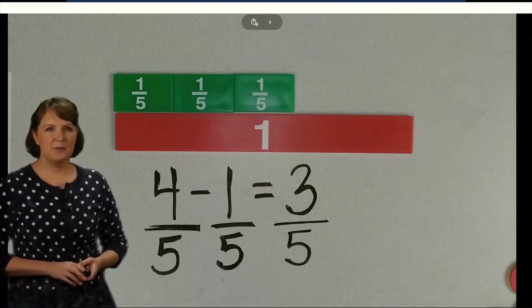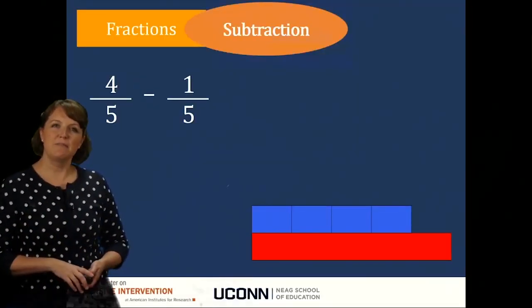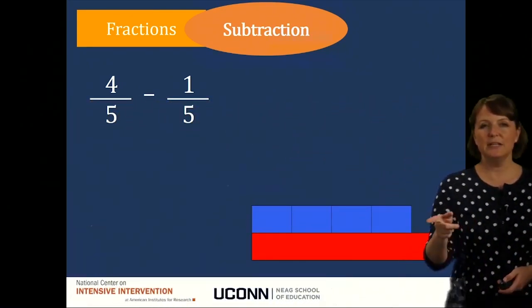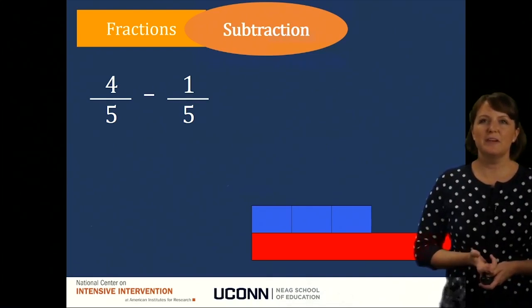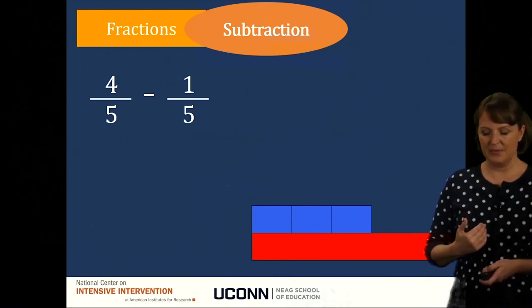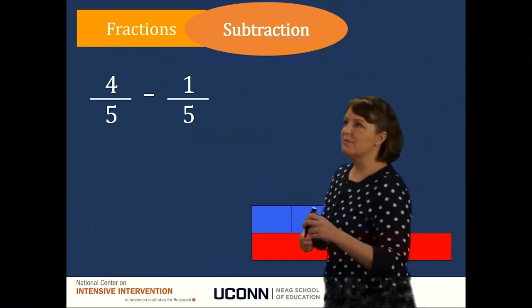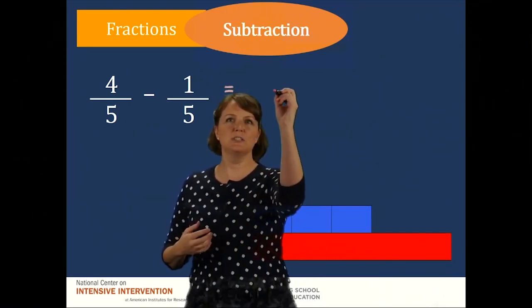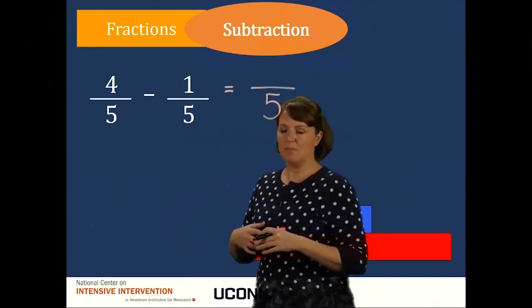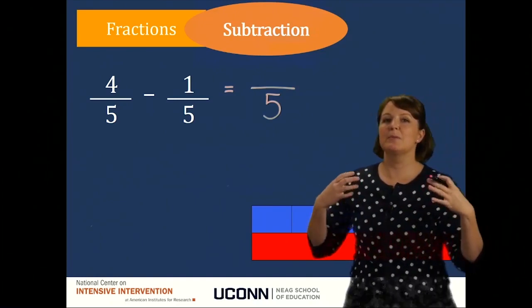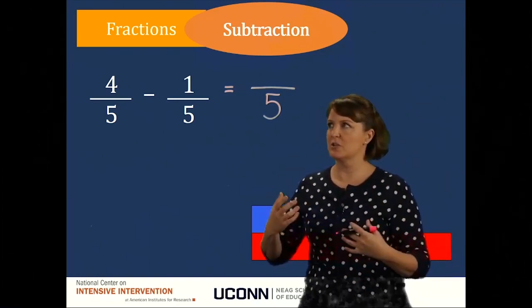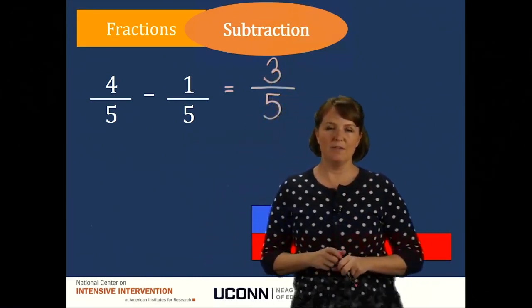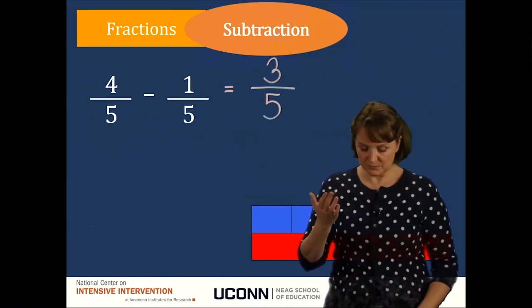Now let's switch over and look at our pictorial representation. Same problem — here I have my four-fifths. How many pieces do I need to take away? I need to take one one-fifth piece. So four-fifths minus one-fifth equals three-fifths. When emphasizing this with the abstract, we want to emphasize that the denominator is not changing, because we are not doing anything with the denominator. We're working in fifths — four one-fifth pieces minus one one-fifth piece is three one-fifth pieces.